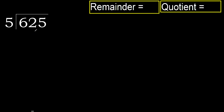625 divided by 5. 6 is not less, therefore with 6: 5 multiplied by which number is nearest to 6 but not greater?